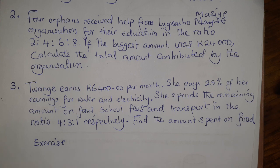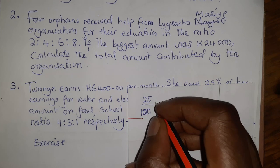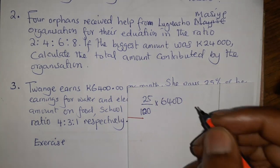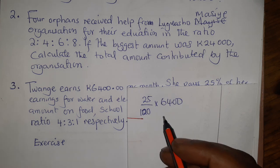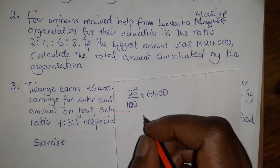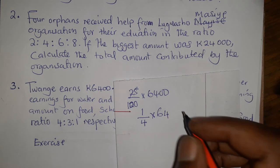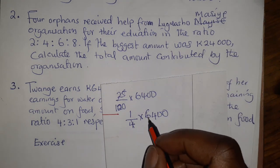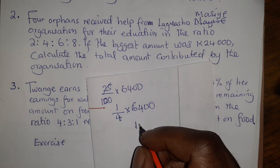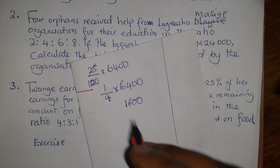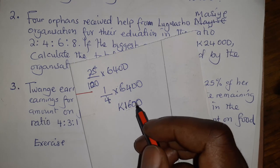The first thing we are supposed to do here is get rid of the 25%. We calculate 25% of 6,400. You simplify: 25 over 100 becomes 1 over 4. Then 4 into 6,400 — 4 into 6 is 1 remainder 2, 4 into 24 is 6. So 1,600 is what goes to electricity and water.